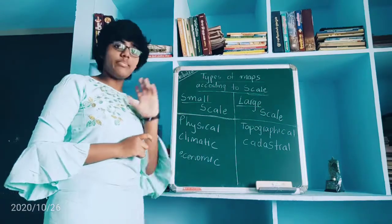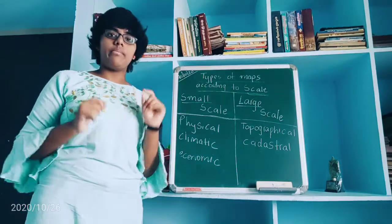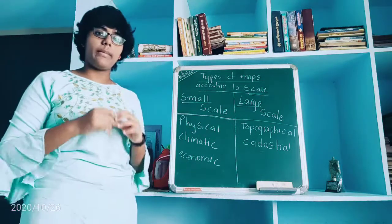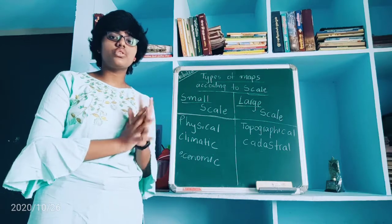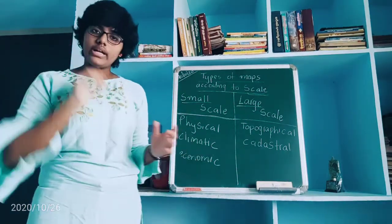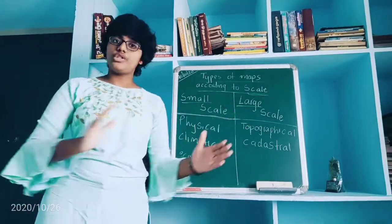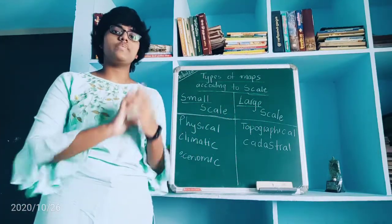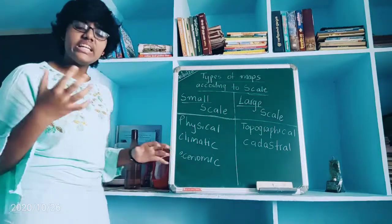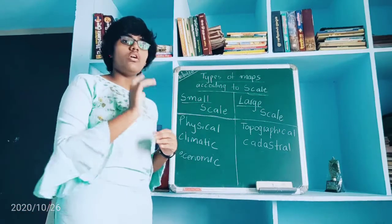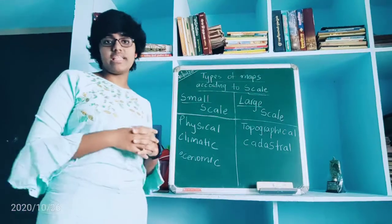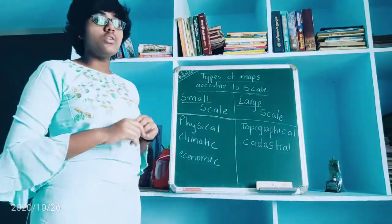For example, if you take a world map, it is a very large map, but the details shown are very less. It will show only the continent names, some country names, and the five oceans. It cannot show everything in clear detail — even if you take a very large physical map, it is very difficult.